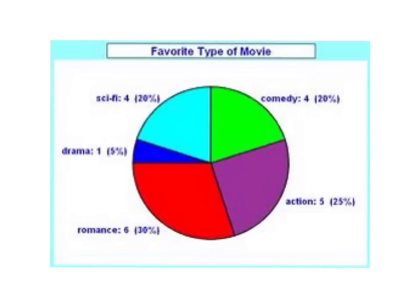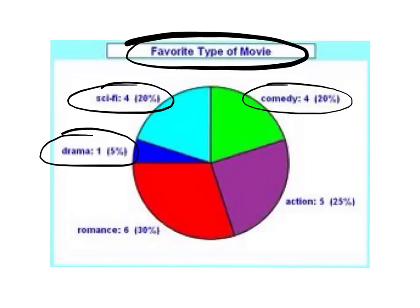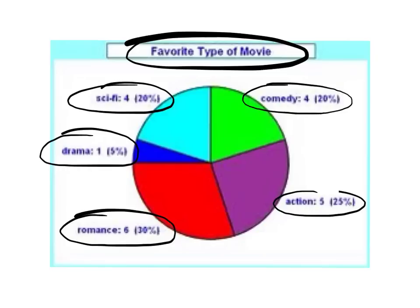In this example you can see there's no key. Again we have a title at the top. But rather than a key, this time they've actually just labelled the sections and put the percentage down for you. With percentages, they will always equal up to 100. This is another way to display the data — comedy is this one here, action is this one here, and so on.